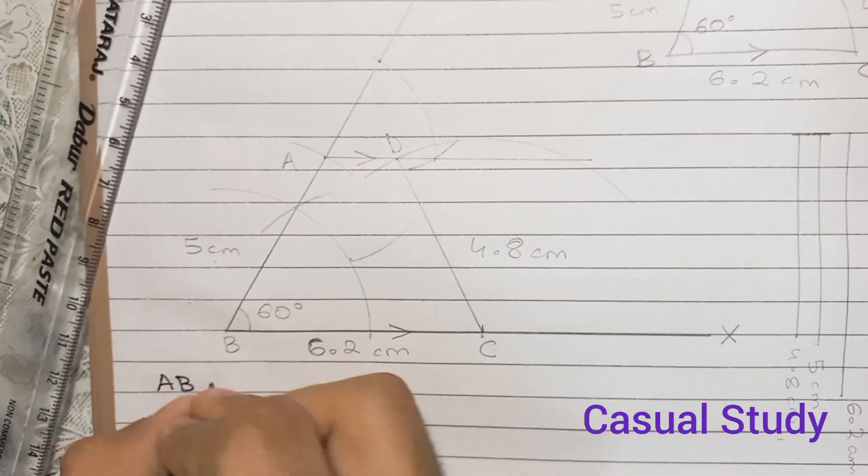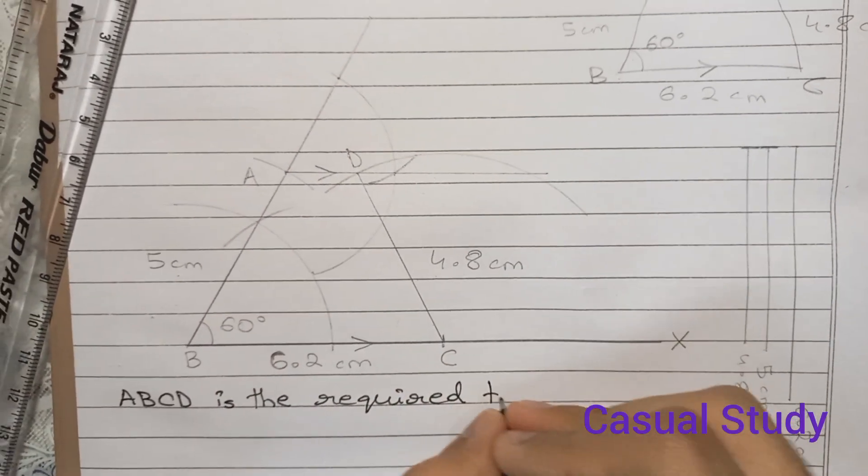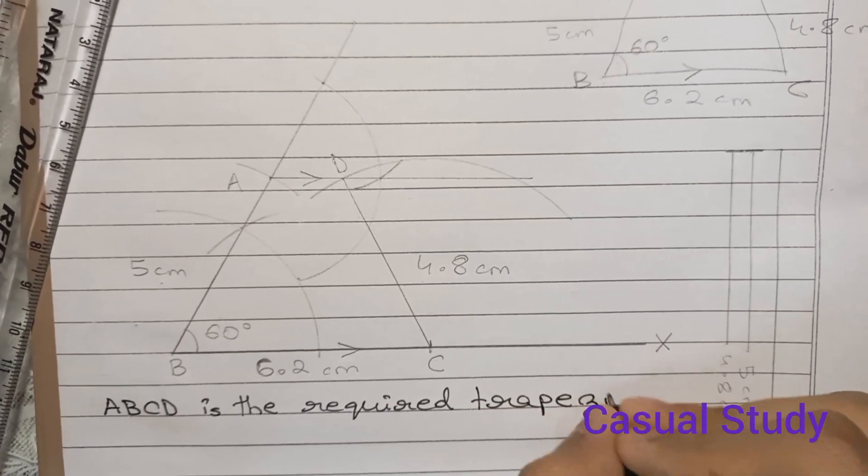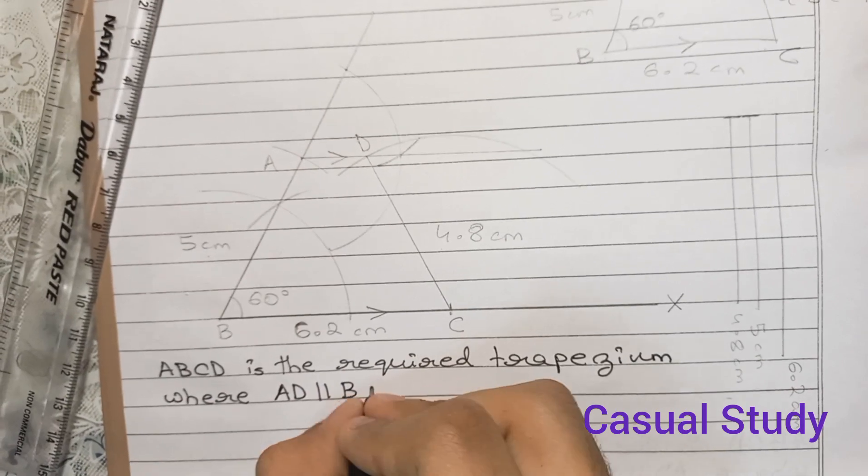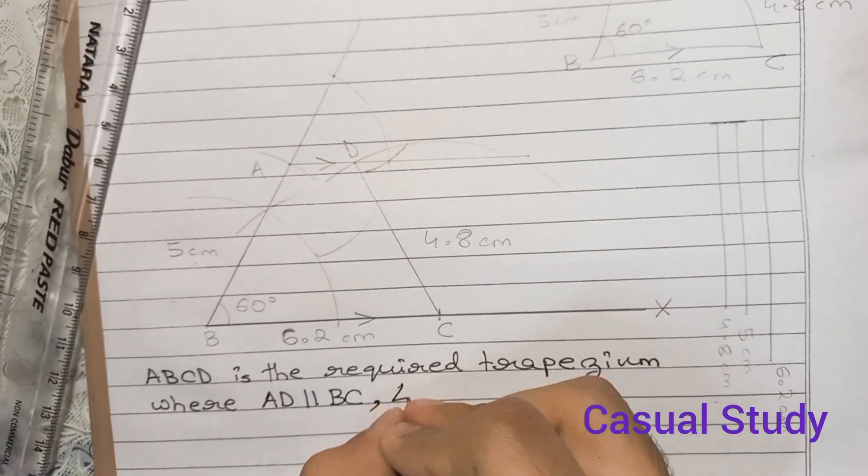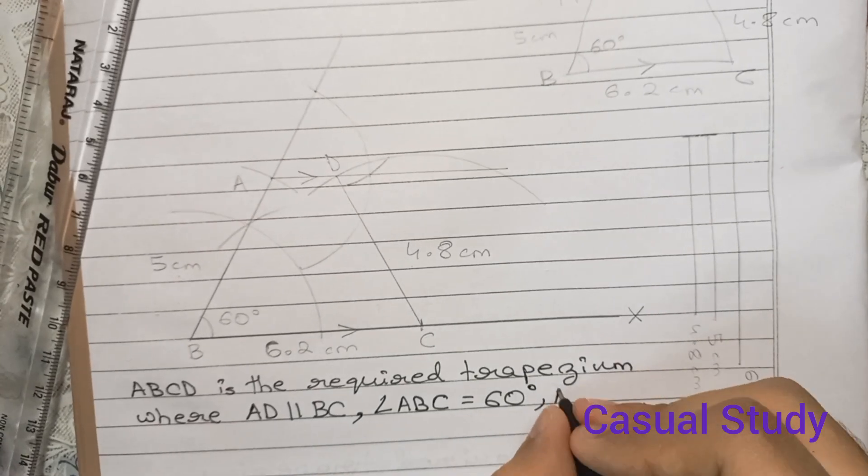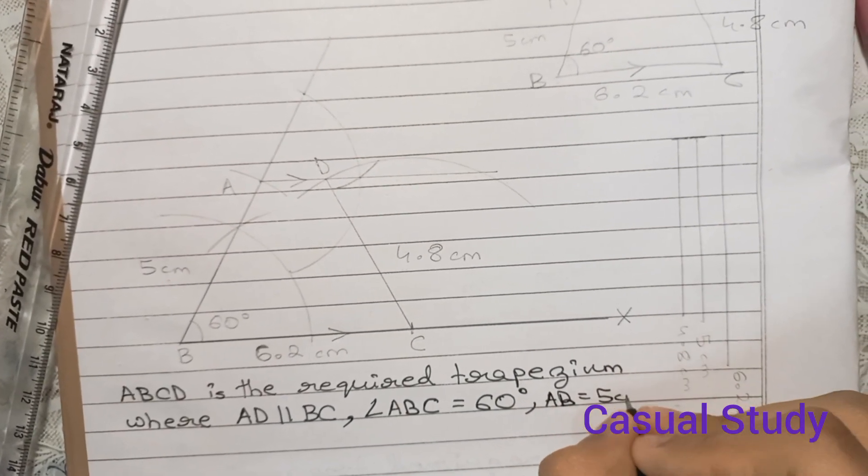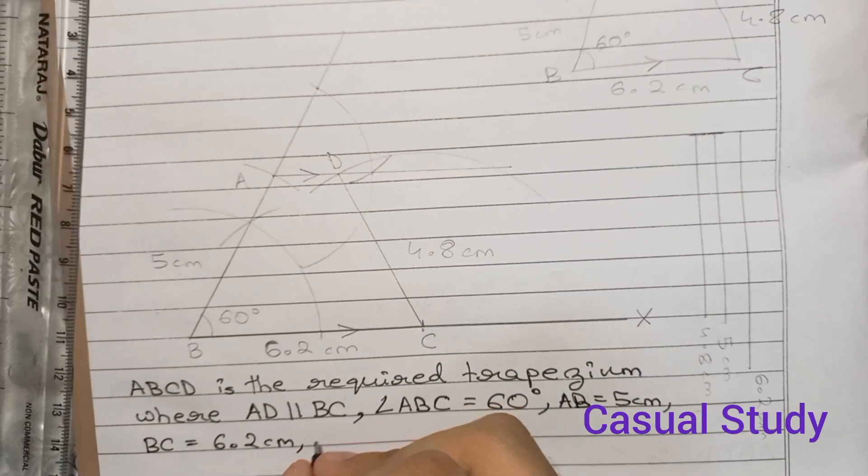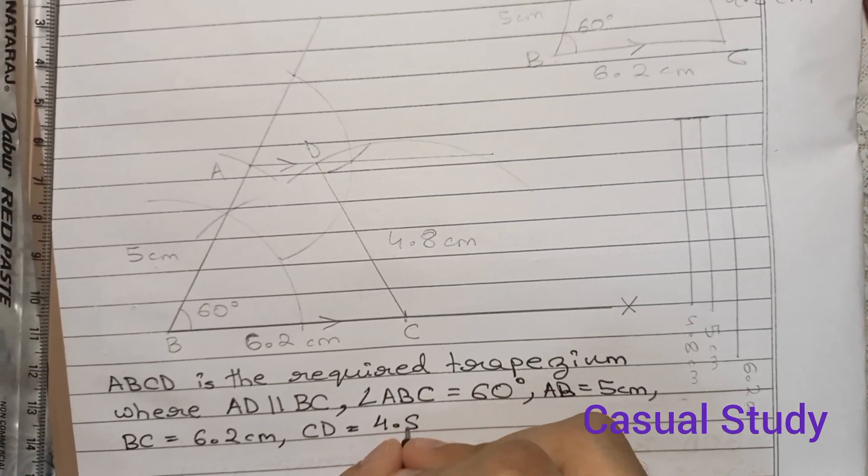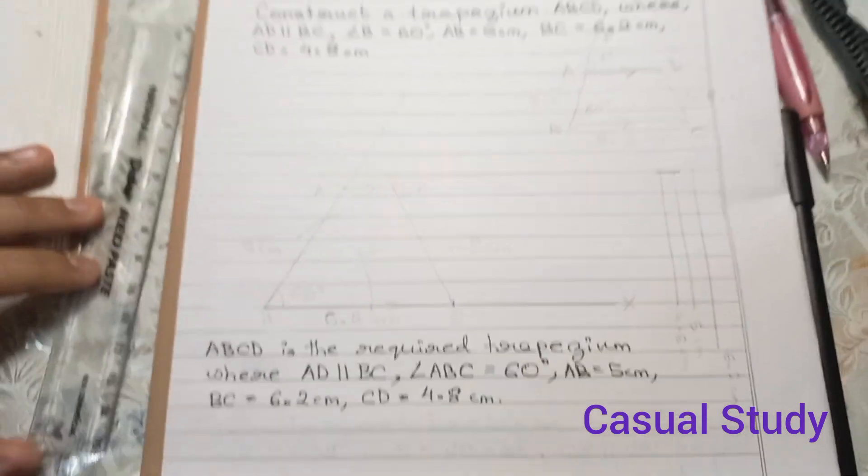Therefore, ABCD is the required trapezium where angle ABC is equal to 60 degrees, AB equals 5 cm, BC equals 6.2 cm, and CD equals 4.8 cm. Thank you. This is our required trapezium.